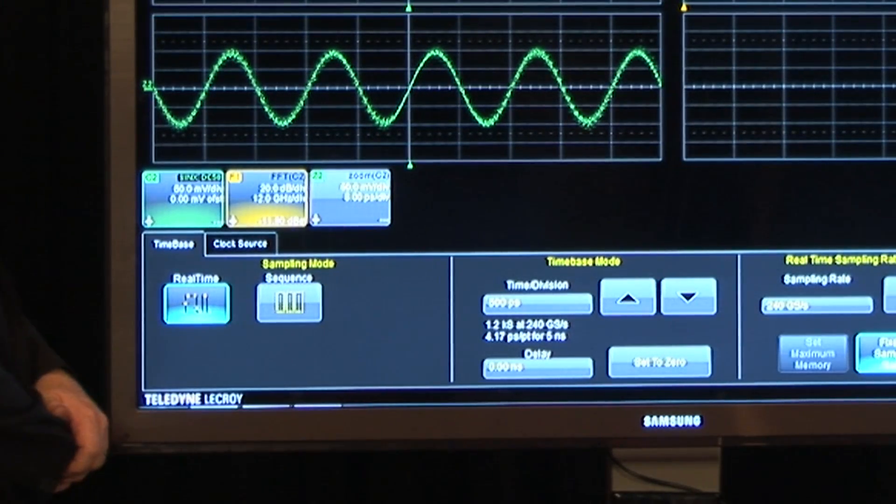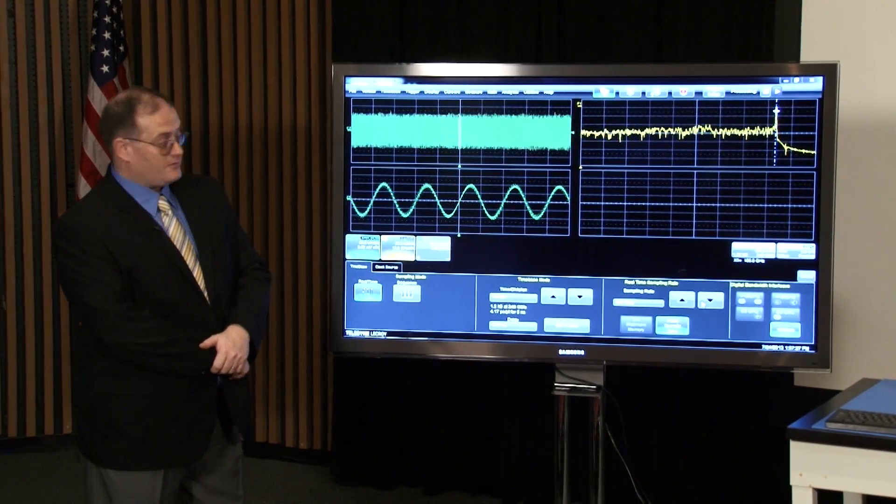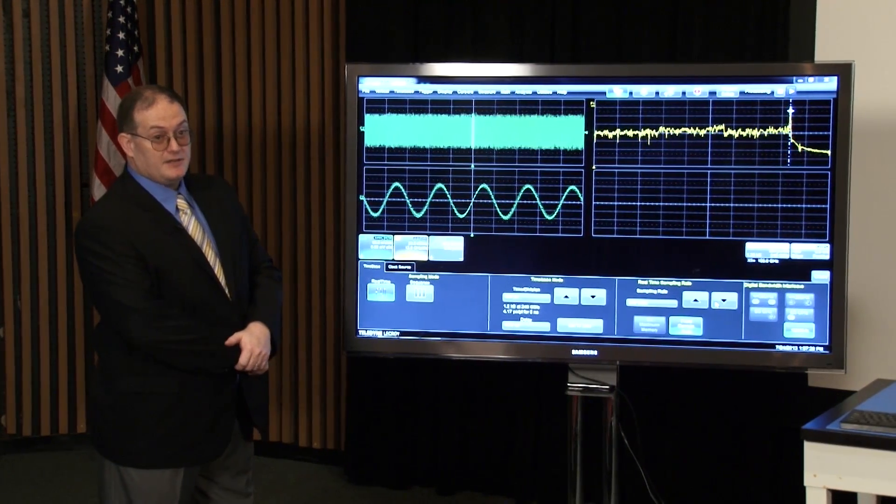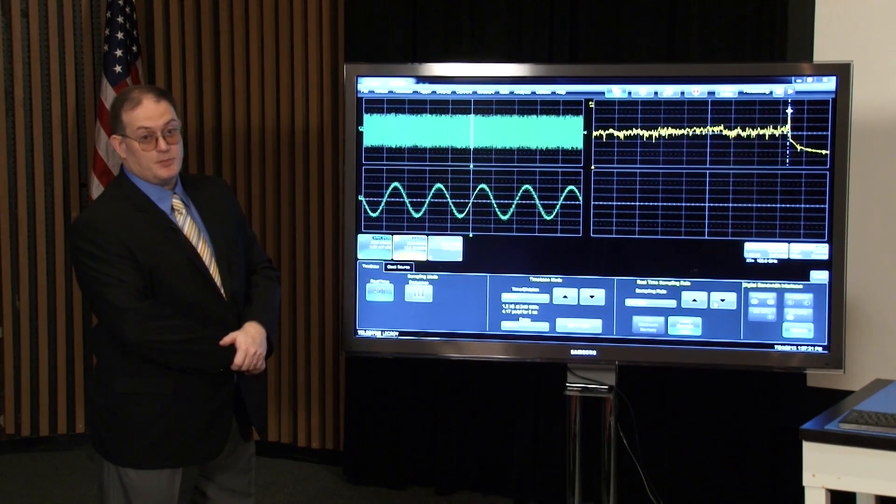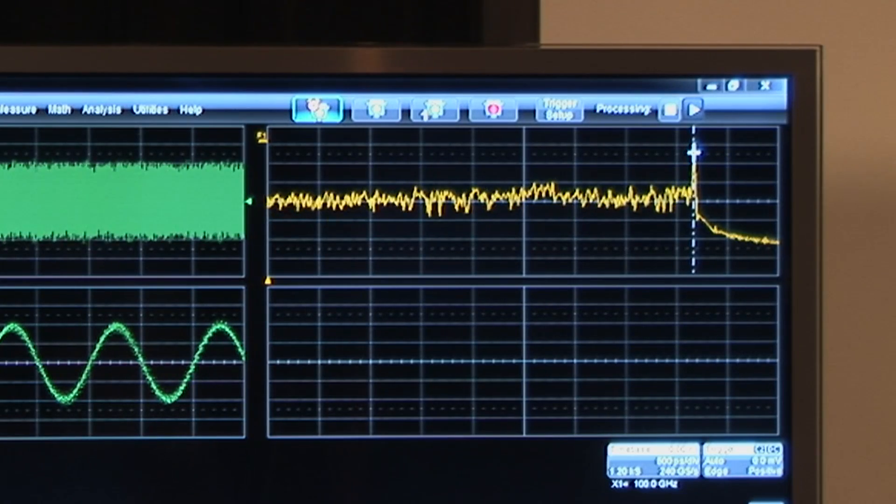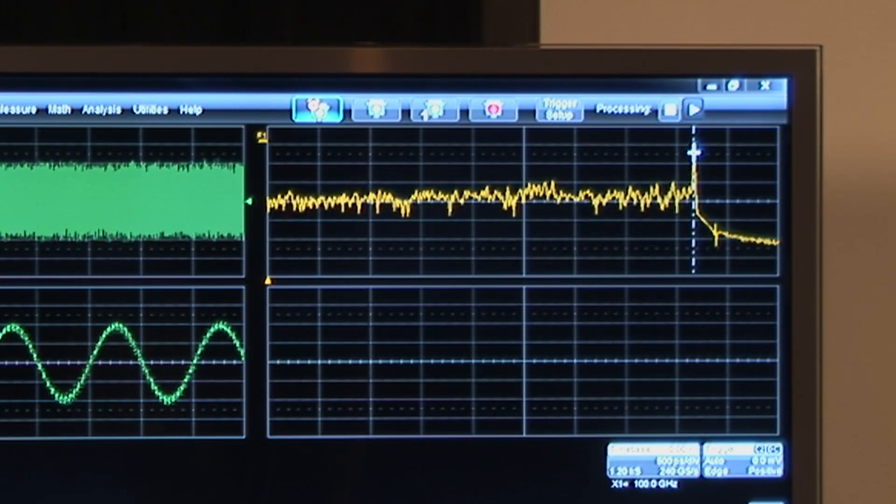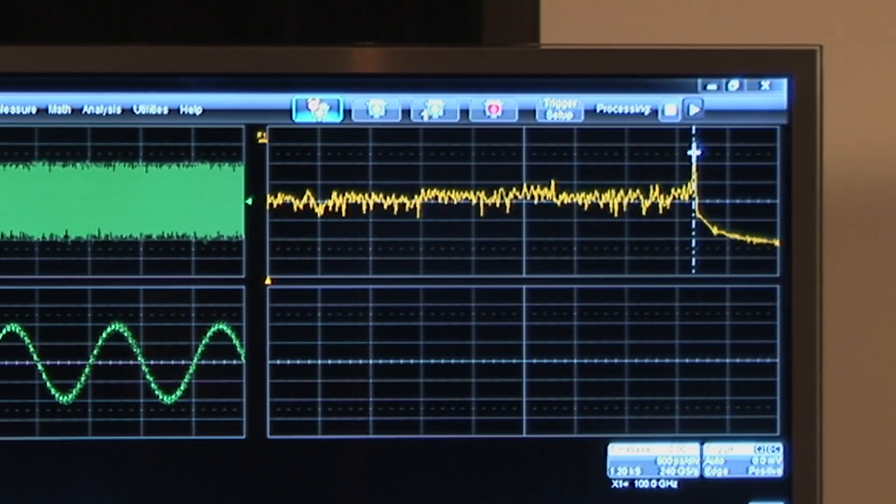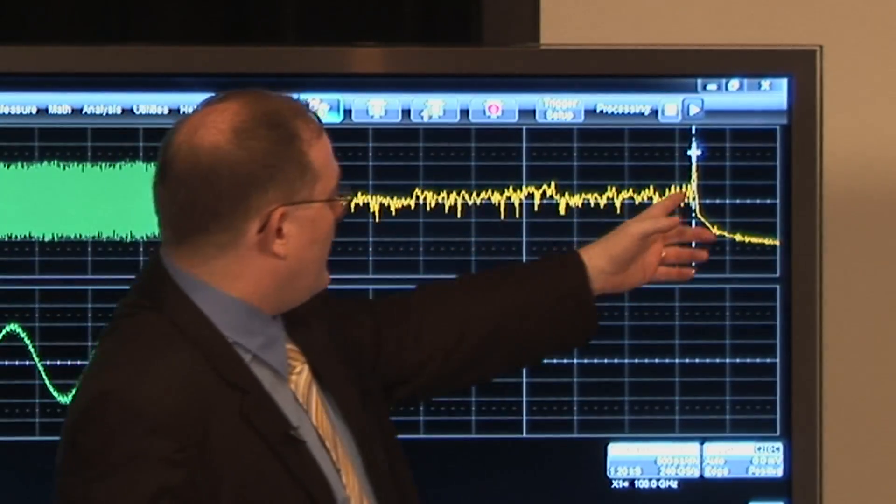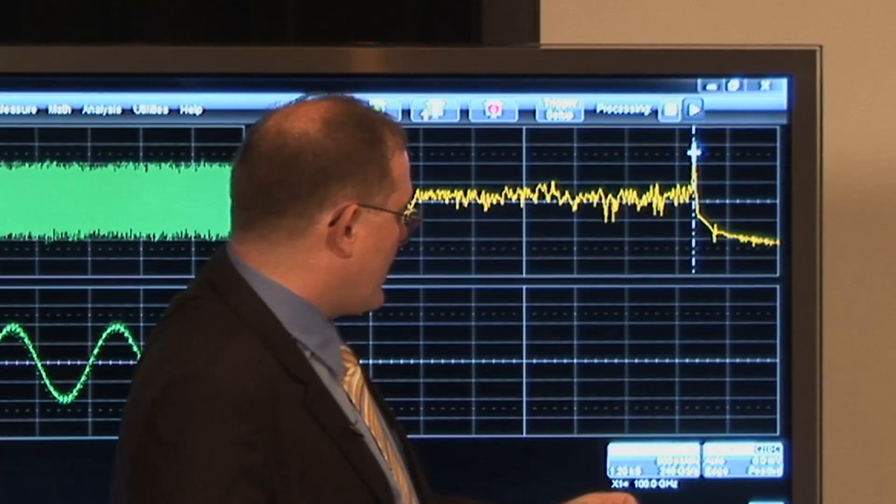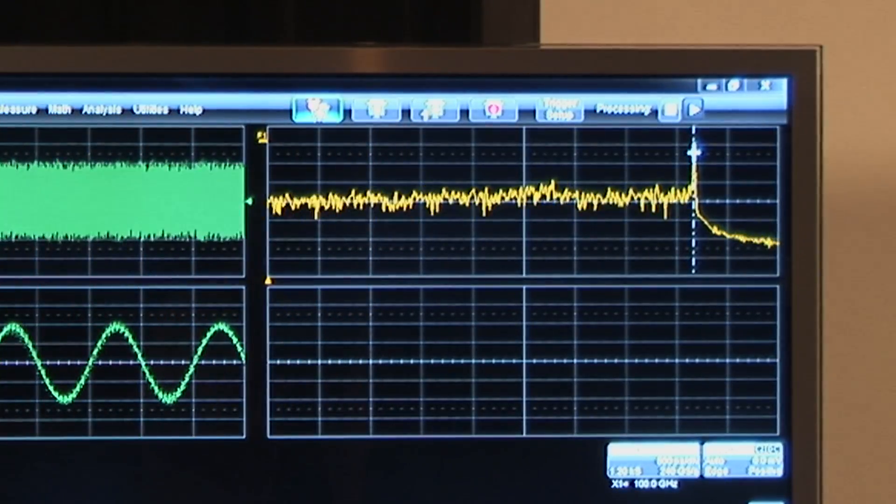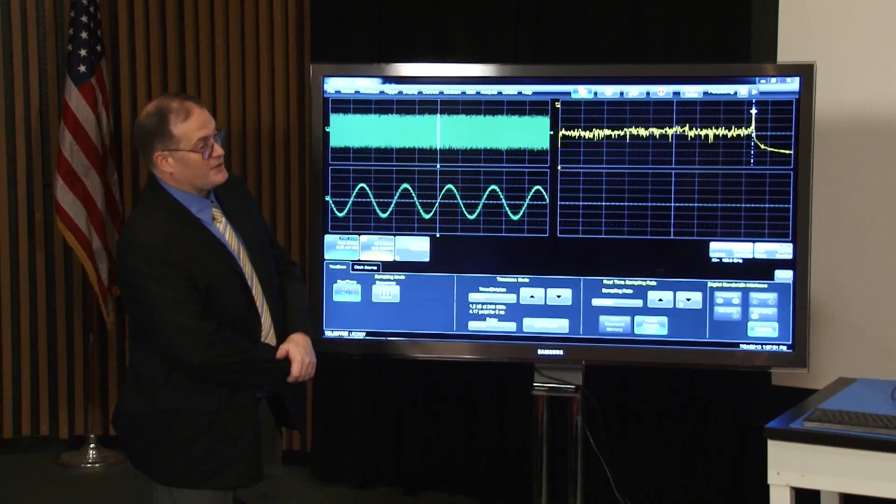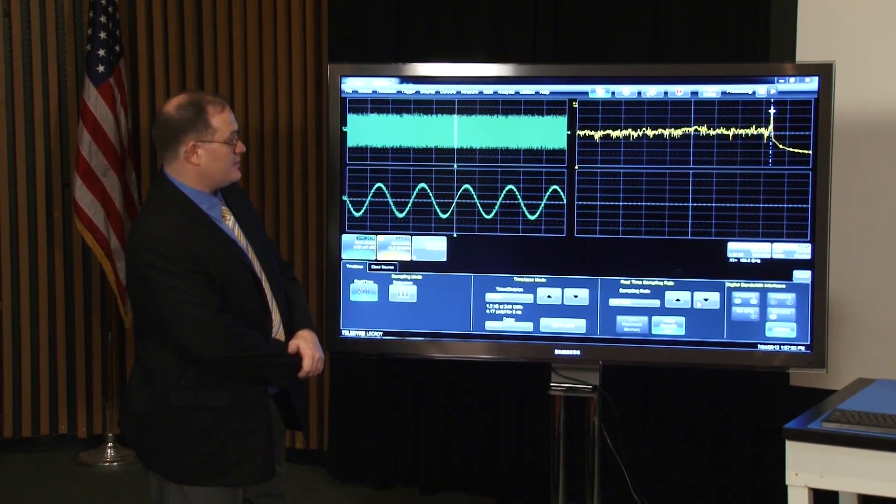The period is 2 divisions, which is 10 picoseconds, and 10 picoseconds is the period of 100 gigahertz. On the third display we are actually looking at the frequency content of the signal, and out there right at the end, marked by the marker at 100 gigahertz, there is the tone that we are injecting right now in the system.